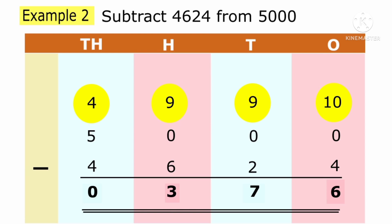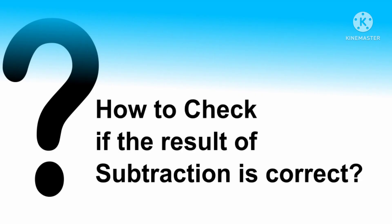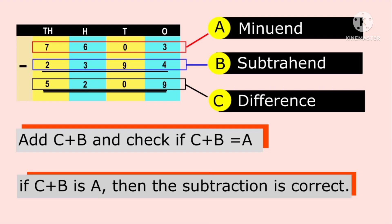How to check if the result of subtraction is correct? Just add the subtrahend and the difference — if it is the same as the minuend, the subtraction is correct.